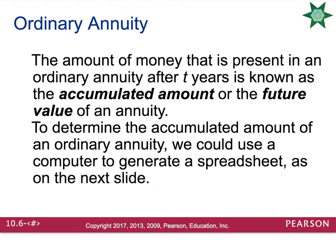The amount of money that is present in an ordinary annuity after a certain number of years is known as the accumulated amount or the future value of an annuity. To determine the accumulated amount of an ordinary annuity, you could use a computer to generate a spreadsheet like what we see on the next slide.